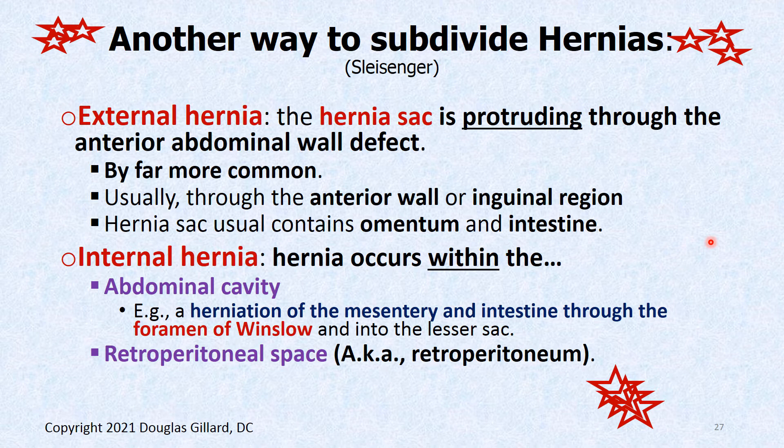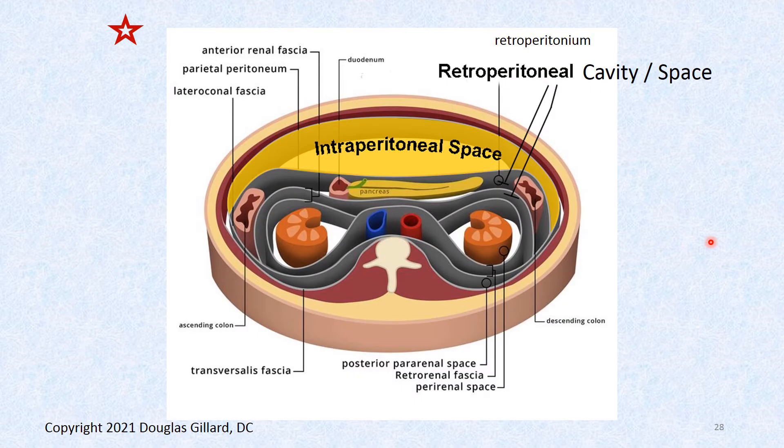Another way to subdivide hernias is external versus internal. External hernias are the ones we can see — the hernia sac is outside the abdominal wall. These are by far the most common, usually in the anterior abdominal wall or inguinal region, and can contain intestine or greater omentum. Internal hernias occur inside — we can't see these. One type can go through the foramen of Winslow into the lesser sac. Another can go into the retroperitoneal space and get pinched. These can incarcerate as well.